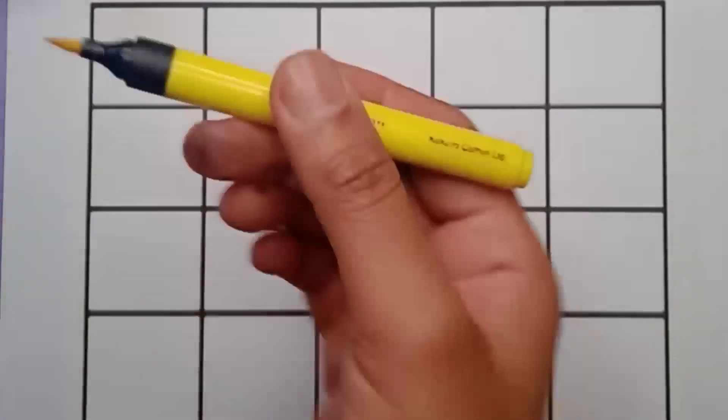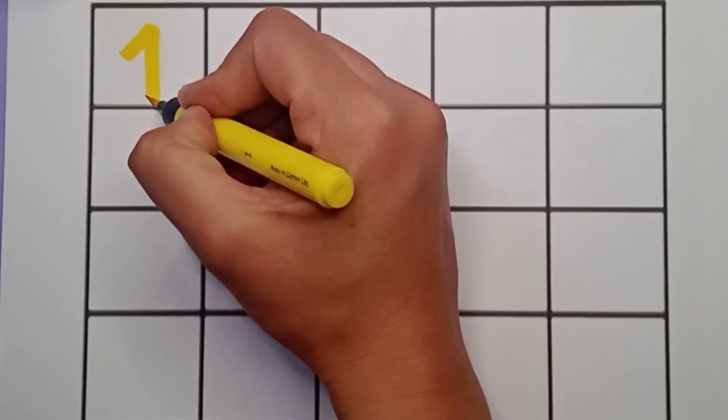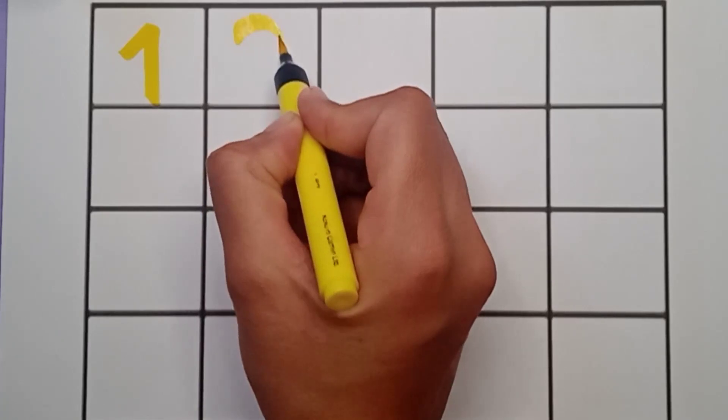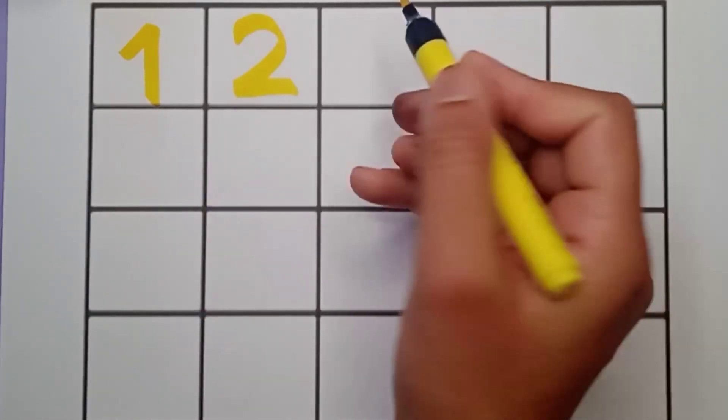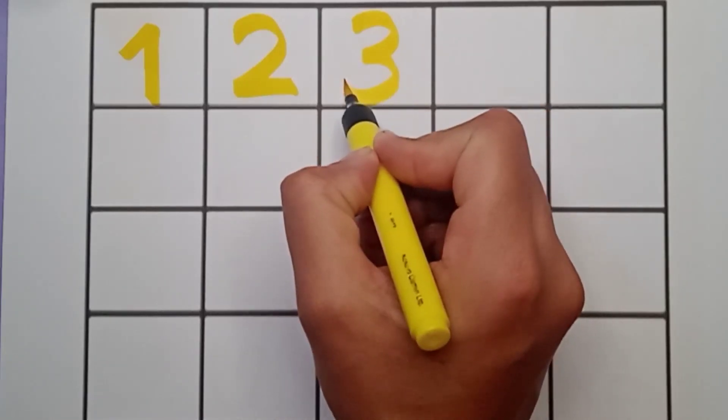Yellow color. One, right here, one. Next number is two, see, two. Next is three, right here, three.